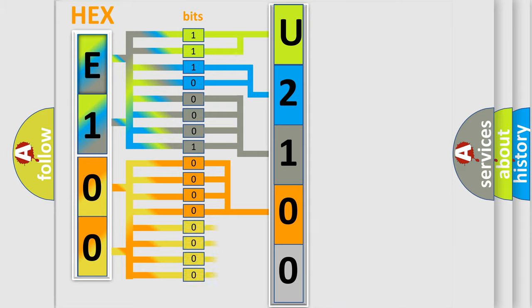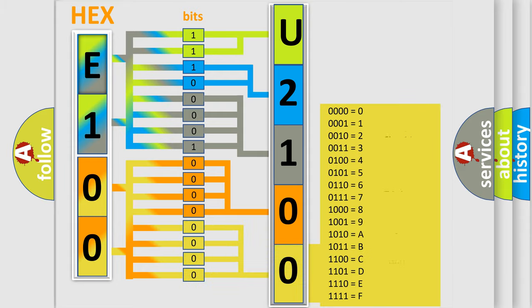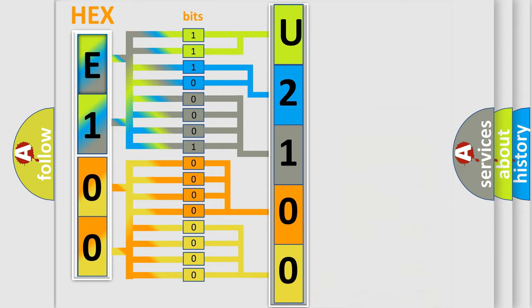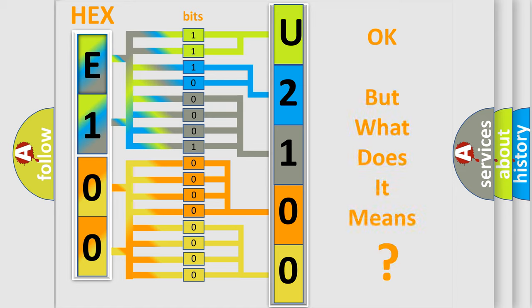A single byte conceals 256 possible combinations. We now know in what way the diagnostic tool translates the received information into a more comprehensible format.